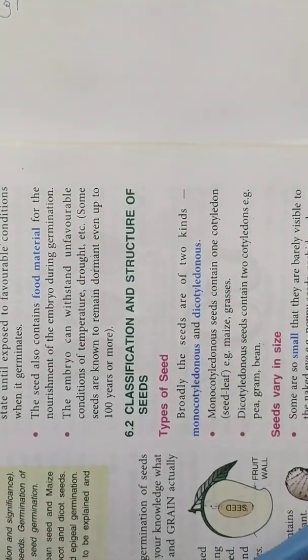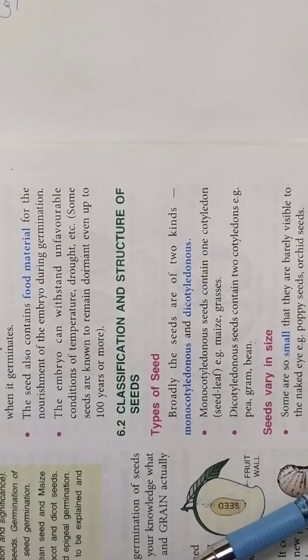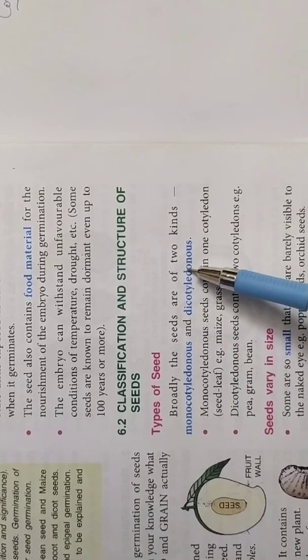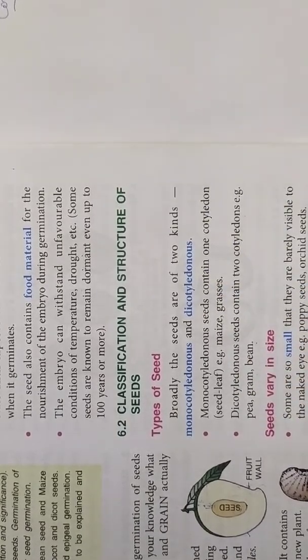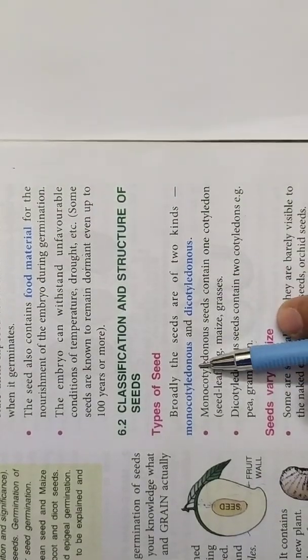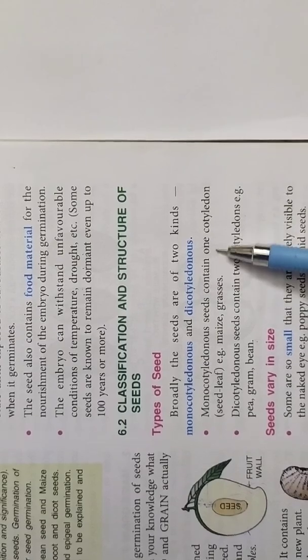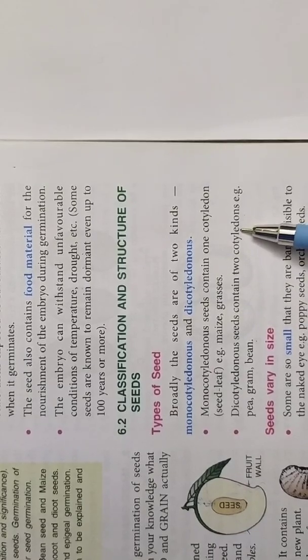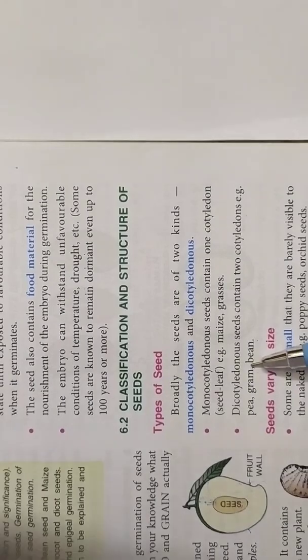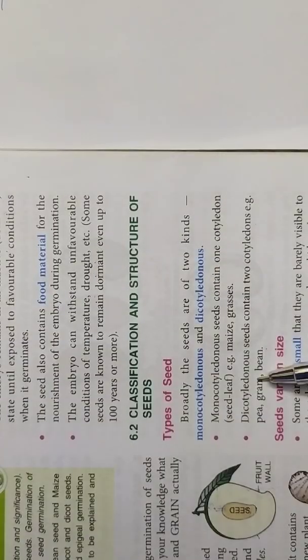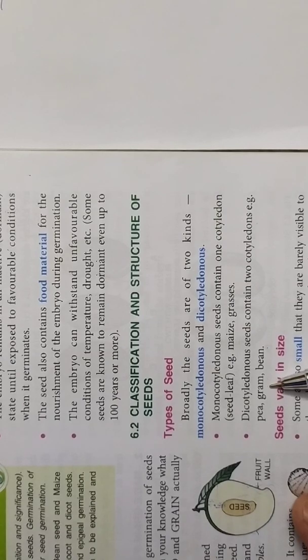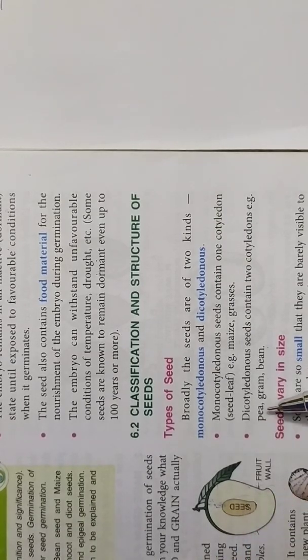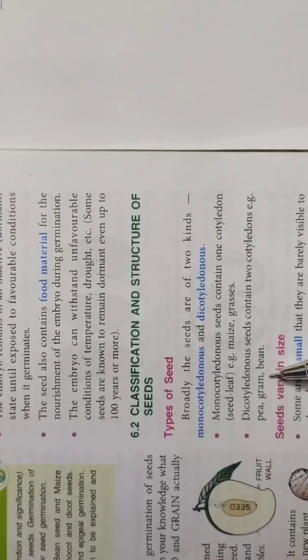Now the next topic is classification and structure of seed. Now first is classification. This classification is based upon two kinds. One is you all have studied these terms earlier also. If the seeds have only one cotyledon then it is called monocotyledon. Monocotyledon and dicotyledon. Monocotyledon seeds contain one cotyledon. For example maize. And dicotyledon seeds contain two cotyledons. Like once I have shown you in class 8. You can soak some seeds and then after they get swelled up properly, the pulses or the gram seeds, you can easily split them in two parts. Those are the two cotyledons.